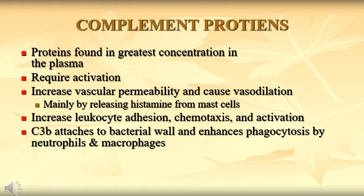Complement proteins are at their greatest concentration in the plasma and require activation — without activation they will not work. They increase vascular permeability and cause dilation. This function of complement proteins also happens mainly by releasing histamine. C3b acts as an opsonizer and enhances phagocytosis by neutrophils and macrophages. The coagulation and kinin system are plasma-derived mediators that are interlinked. In coagulation, fibrin forms a clot. Factor 12 (Hageman factor) activates the system and can convert to kallikrein and kinin.